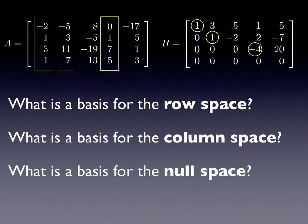Finally, what is the basis for the null space? To find a basis for the null space, we need to look at the number of free variables. If we consider A as the coefficient matrix for a homogeneous system of equations, performing elementary row operations to convert A to B has no effect on the right-hand side, which is a zero vector. We have two free variables, coming from the third column and the fifth column of B. So the dimension of the null space is two. To actually find the basis vectors requires solving the homogeneous system of equations and finding the two vectors that make up all linear combinations of that solution.